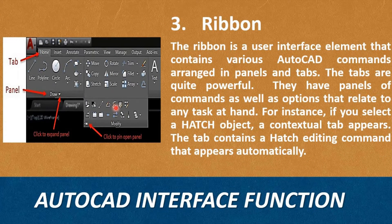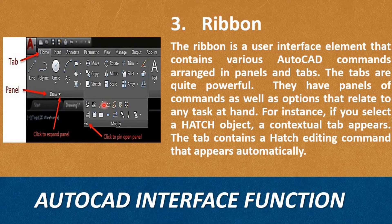Third, Ribbon. The Ribbon is a user interface element that contains various AutoCAD commands arranged in panels and tabs. The tabs are quite powerful — they have panels of commands as well as options that relate to any task at hand. For instance, if you select a Hatch object, a contextual tab appears. The tab contains Hatch editing commands that appear automatically.